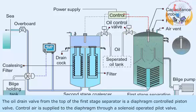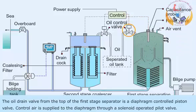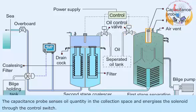The oil drain valve from the top of the first stage separator is a diaphragm-controlled piston valve. Control air is supplied to the diaphragm through a solenoid-operated pilot valve. The capacitance probe senses oil quantity in the collection space and energizes the solenoid through the control switch.